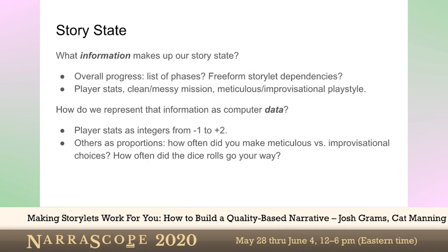In this case, we have some sort of overall progress thing, which in this quick implementation I just used as a list of what phase are we at. It could also be more free-form storylet dependencies: this thing can't happen until you've gotten past the guards, whatever. We have the Powered by the Apocalypse model: you roll 2d6, add the stat, and check it against thresholds to see if you got a bad result, a mixed success, or a good result. That allows the player stats to be just integers from -1 to +2, so adding 1 to your stat is a big deal. We also have 'clean versus messy mission' and 'meticulous versus improvisational playstyle.' I chose to represent those as proportions — we keep a count of how many meticulous choices and how many improvisational ones were made, then look at what fraction went either way.